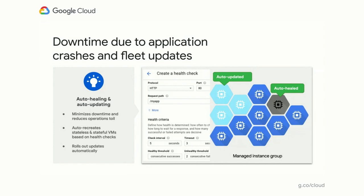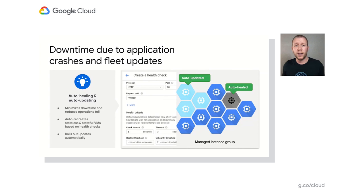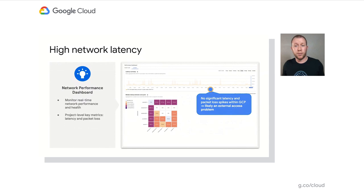Now that he has addressed his application's compute capacity issues that have been contributing to the poor performance, Steve decides to go deal with the regional issue that Alice reported, where some of their users in Europe were impacted more than the rest of the world. He suspects these problems might be caused by the network. And he isn't the networking expert, so Steve would typically hand something like this off to the networking team for investigation. But as he is fighting the clock, he decides to open the Network Intelligence Center and see what he can find out on his own.